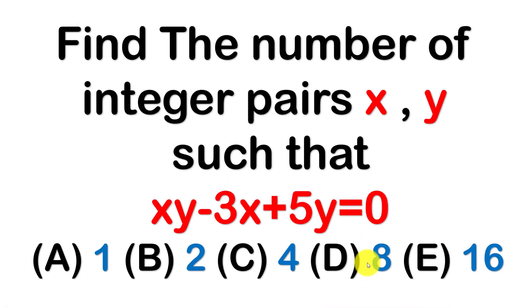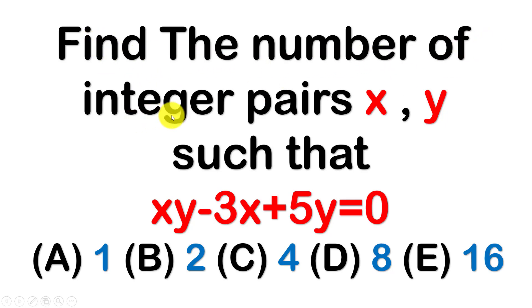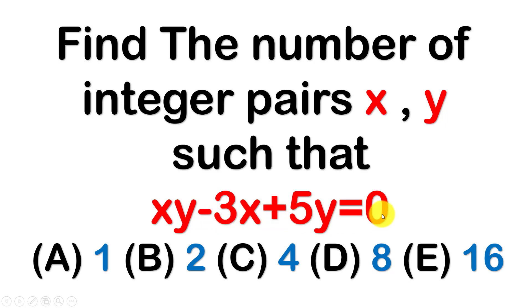Hello everyone. Welcome to education channel. Today I have one exercise on screen. Find the number of integer pairs (h, y) such that hy minus 3h plus 5y equals 0.